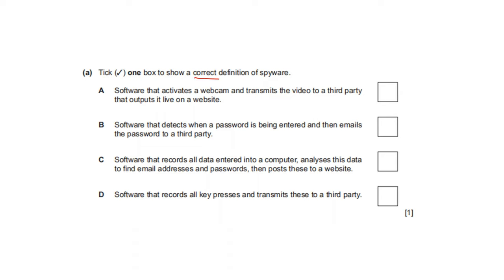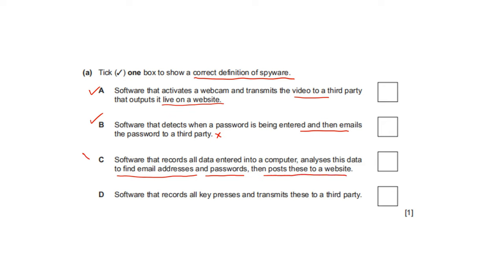Tick one box to show the correct definition of spyware. Option A — software that activates a webcam and transmits video to a third party — incorrect. Option B — software that detects where a password is entered and emails it to a third party — incorrect. Option C — software that records all data entered, analyzes it for emails and passwords, then posts them — incorrect. Option D — software that records all key presses and transmits these to a third party — correct. Option D is correct.